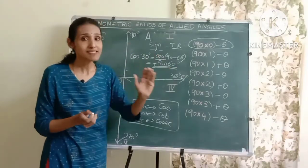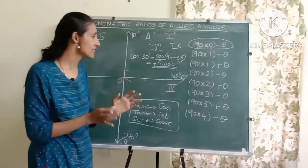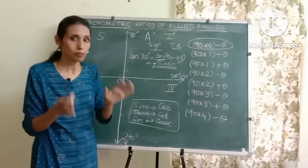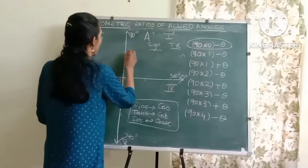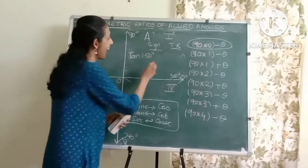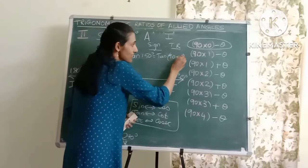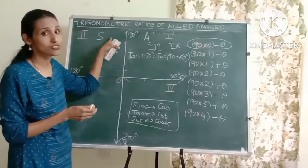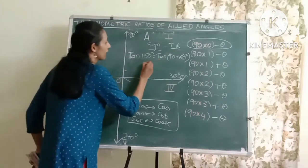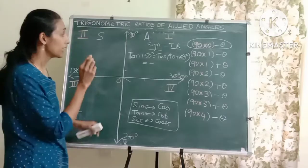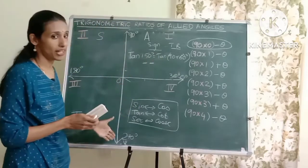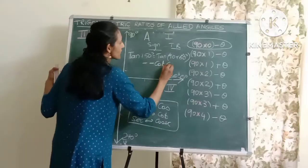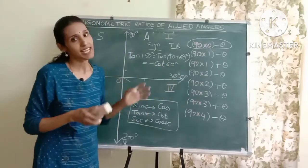For 90 plus theta, it will lie in the second quadrant where only sine and cosec are positive. Suppose I have tan of 150 degrees — I can write it as tan of (90 plus 60 degrees). This lies in the second quadrant, but this is tan, and only sine and cosec are positive, so the sign will be negative. Because this involves 90 on the y-axis, the trigonometric ratio changes: tan changes into cot. So it becomes minus cot 60 degrees.